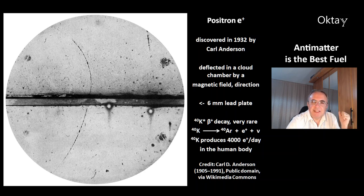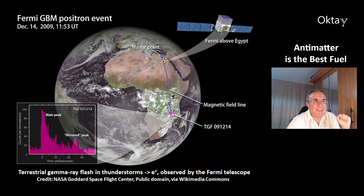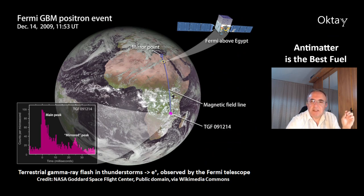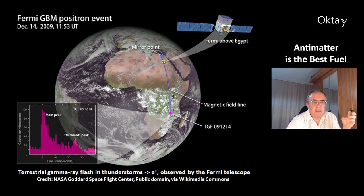The human body produces from this potassium-40 decay process about 4,000 positrons per day, which is insignificant. Another positron-producing event was detected with the Fermi telescope — it's a terrestrial gamma-ray flash in a thunderstorm, a natural phenomenon that also produces positrons.